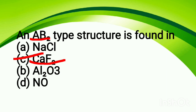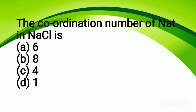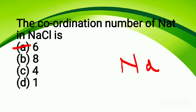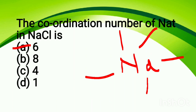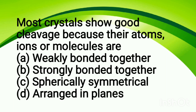The coordination number of Na⁺ in NaCl is: option A, 6; option B, 8; option C, 4; option D, 1. The correct answer is 6. Coordination number means how many ions surround a given ion in the lattice. In the NaCl lattice, each Na⁺ is surrounded by 6 Cl⁻ ions, and each Cl⁻ is surrounded by 6 Na⁺ ions, forming the coordination structure.